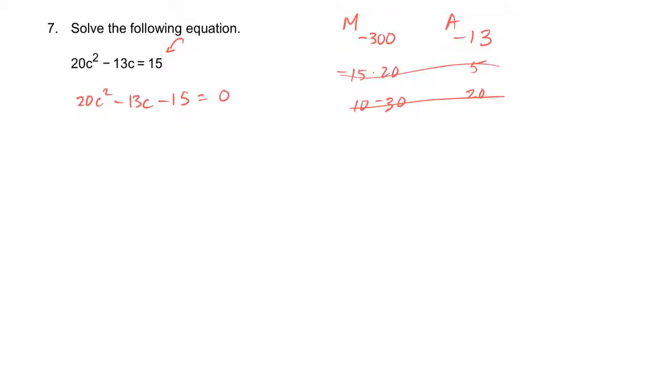I paused and got a calculator. 12 times 25, 12 times the negative 25 is 300. And when you add those, you get negative 13. So those are my numbers. So let's replace the 13 with plus 12c minus 25c minus 15 is equal to zero. Also notice it doesn't matter what order you put those in over here as long as the signs are correct. Sometimes it's nice to put the negative one first,